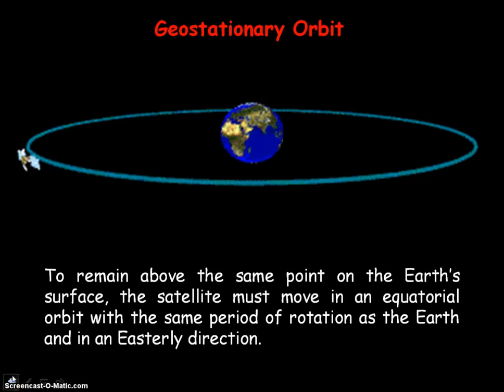To be geostationary, the satellite must move in an orbit above the Earth's equator, as this is the only point on Earth that the gravitational force on the satellite will be towards the centre of mass of Earth.